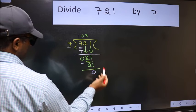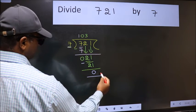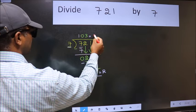No more numbers to bring down, so we stop here. This is our remainder and this is our quotient.